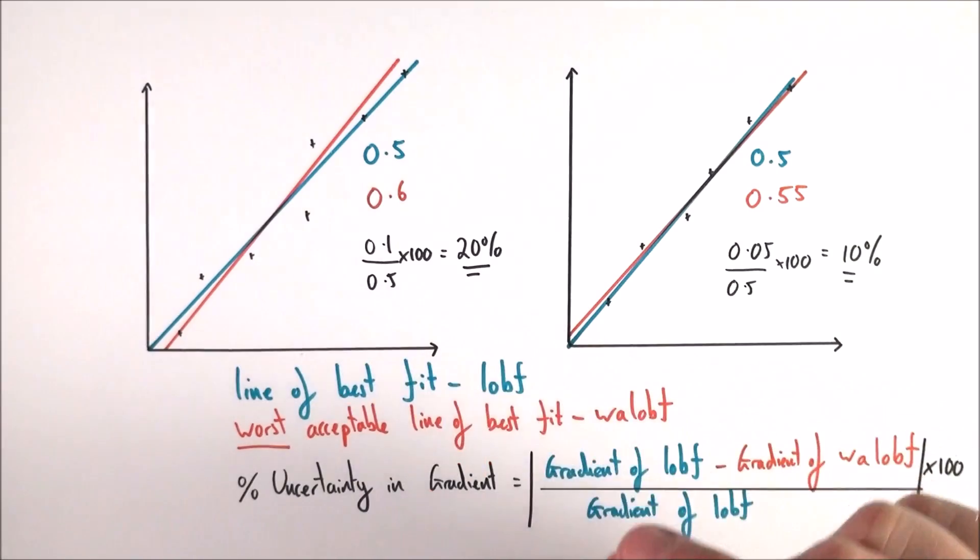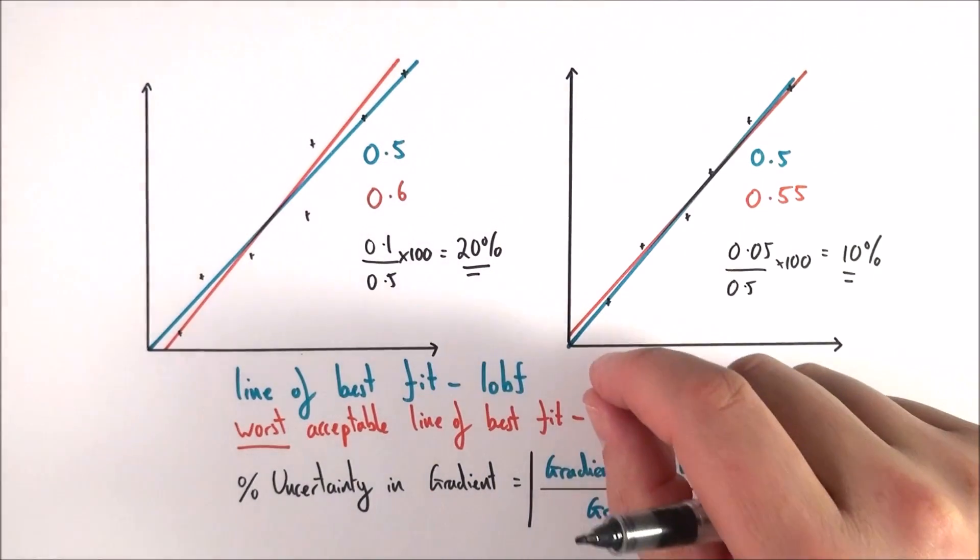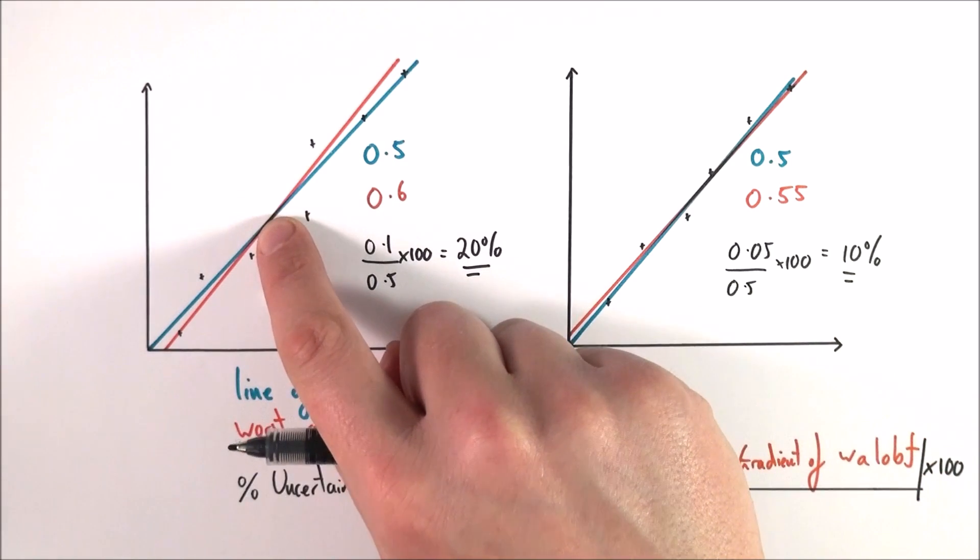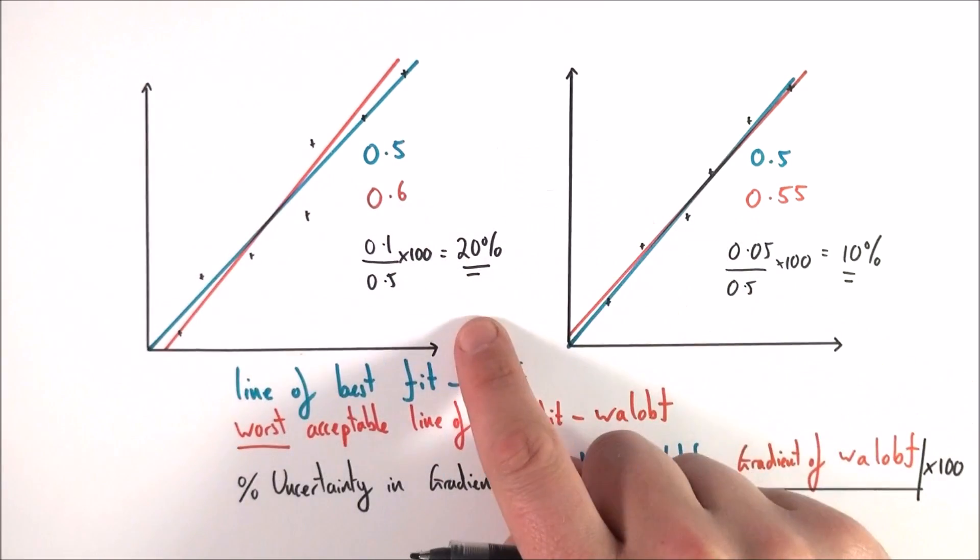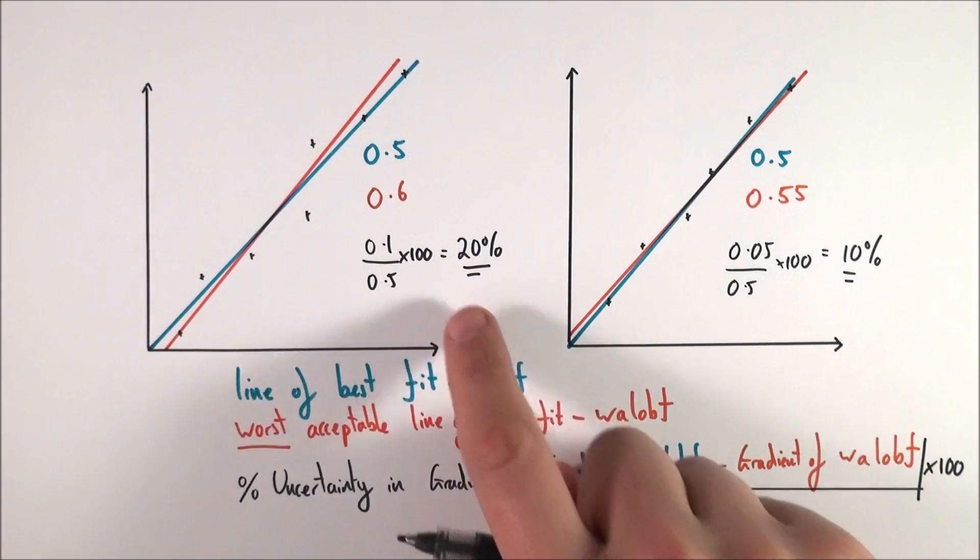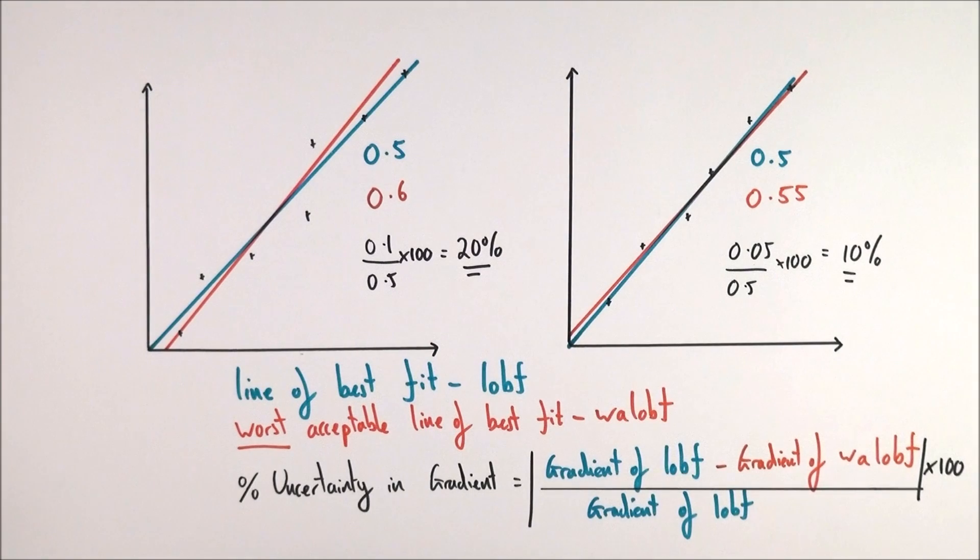So I hope that helps. It's something which is in the specification for AS physics as well as A2, and it's something that they might give you a graph like this and maybe ask you to work out the percentage uncertainty in the gradient. If you know what to do, use this equation here, which isn't in the data book, then you can find the percentage uncertainty in that line. So I hope that helps, and good luck. Thank you.